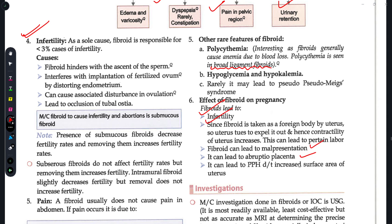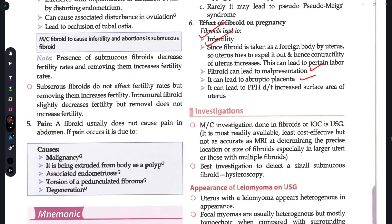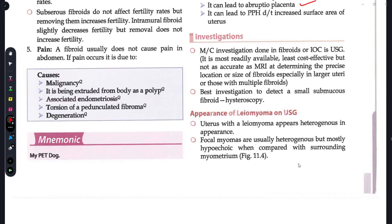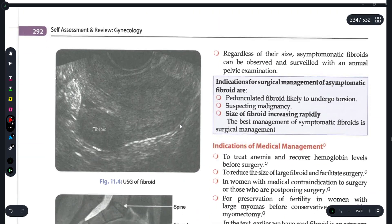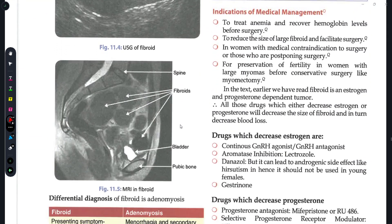Placenta can be affected — placenta accreta can occur. Regarding investigations, the investigation of choice is ultrasonography. The best investigation to detect a small submucous fibroid is hysteroscopy. Ultrasonography can be done generally, but for small submucous fibroids specifically, hysteroscopy is the best investigation.